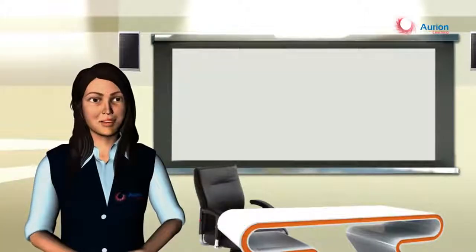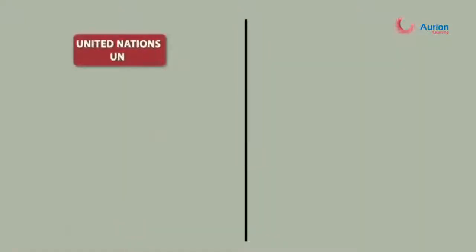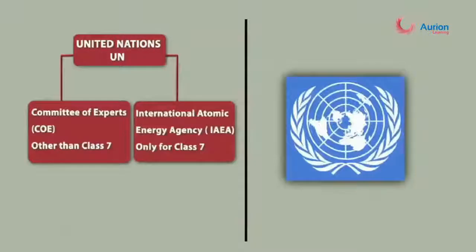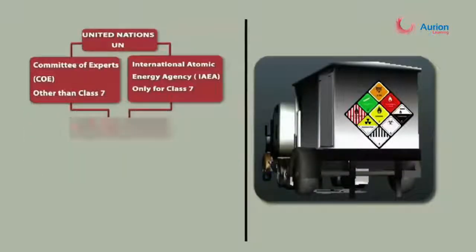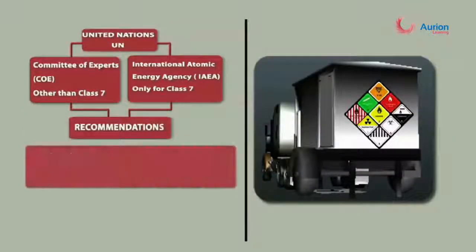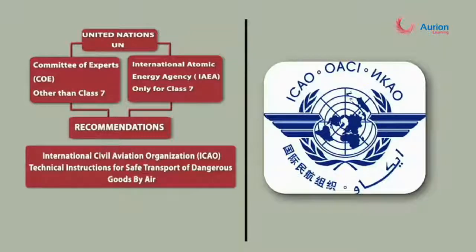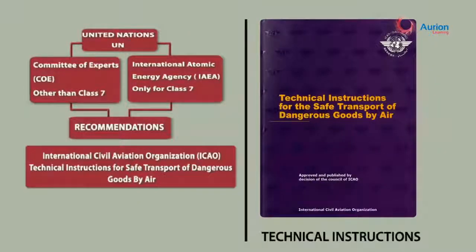Professor, can you tell us who formulated these rules and regulations? Certainly. The United Nations appointed two committees to submit their recommendations on the carriage of dangerous goods: the Committee of Experts (COE) and the International Atomic Energy Agency (IAEA). Based on the recommendations of these two committees, ICAO published the technical instructions along with Annexure 18 to the Chicago Convention.